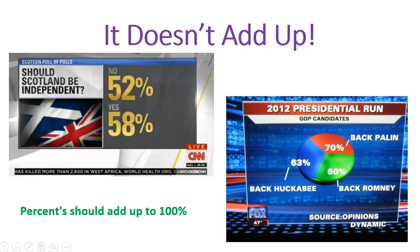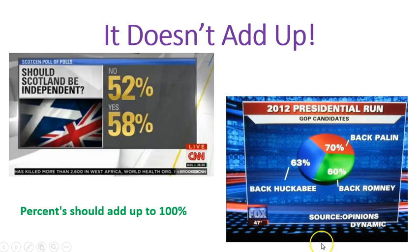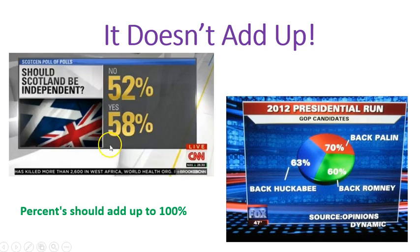The reason for this might be that it's an opinion poll where they asked which of these would you support and you can select as many as you want. That way 60% support Romney, Huckabee 63, Palin 70 — that would be fine. But if it's showing part out of the whole, that's what a pie graph is for. If it's showing a comparison, it should be done in a bar graph. Pie graphs should add up to 100%, and percentages in yes-no should definitely add up to 100%.